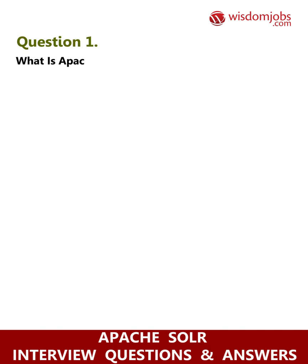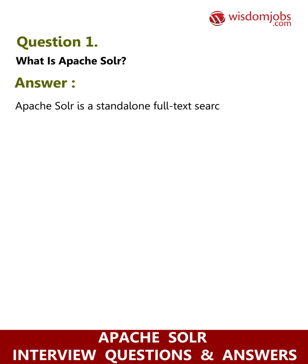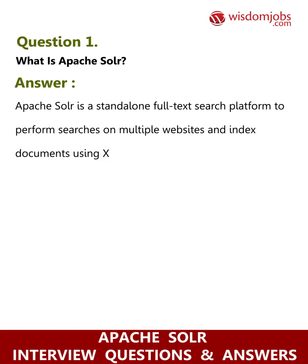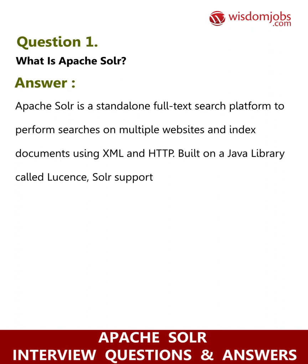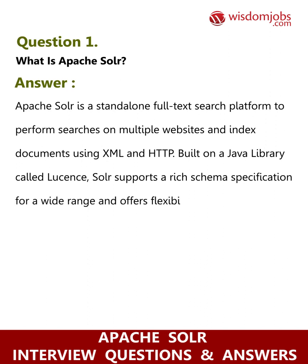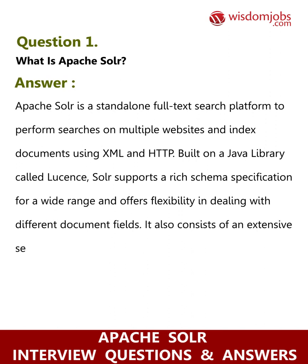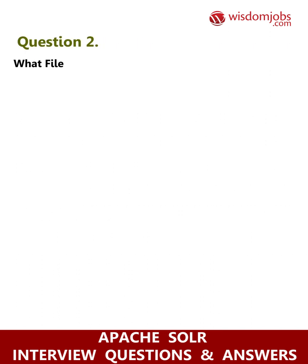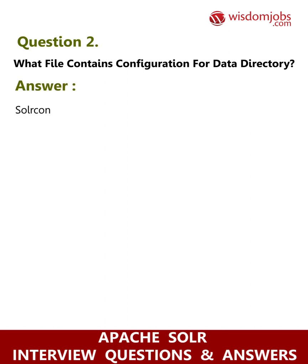Question 1: What is Apache Solr? Answer: Apache Solr is a standalone full-text search platform to perform searches on multiple websites and index documents using XML and HTTP. Built on a Java library called Lucene, Solr supports a rich schema specification for a wide range and offers flexibility in dealing with different document fields. It also consists of an extensive search plugin API for developing custom search behavior.